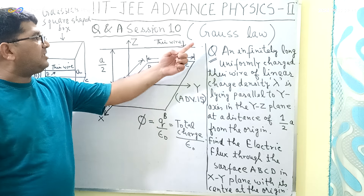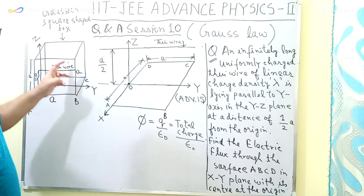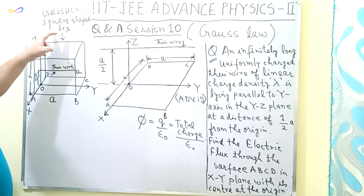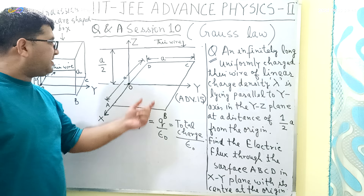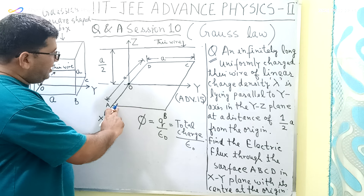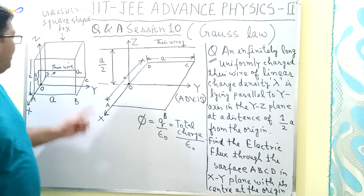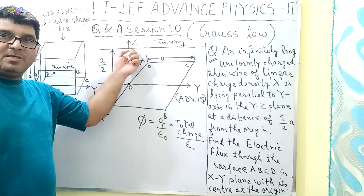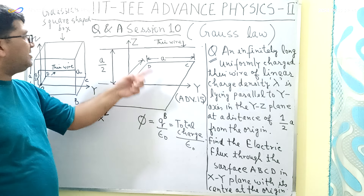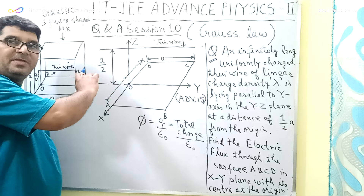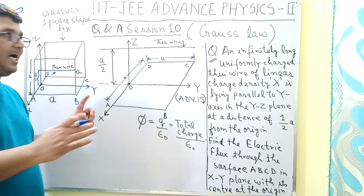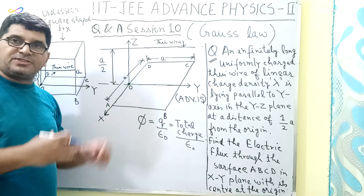In order to utilize Gauss's Law, I will be constructing a Gaussian surface in such a way that this thin wire, which is lying parallel to the y-axis in the y-z plane, will be lying along the geometric center of that Gaussian surface.